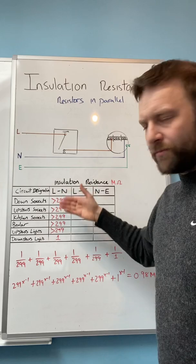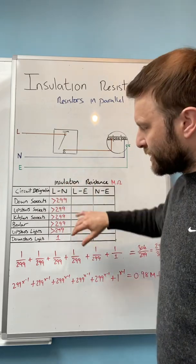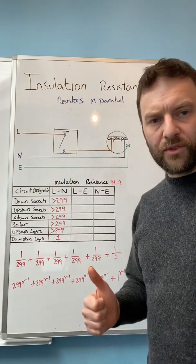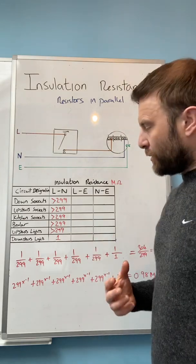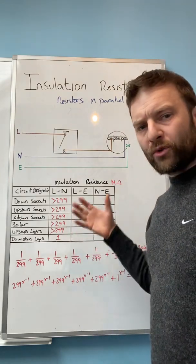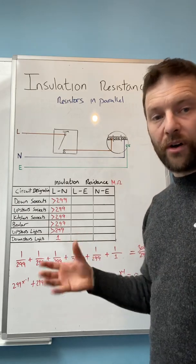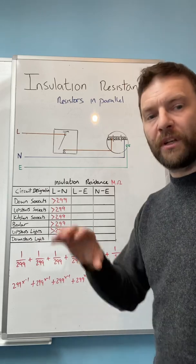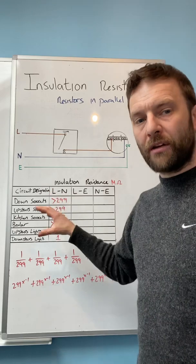And then what I've done is I've just made up some manufactured results between live and neutral for installation resistance. On five of the circuits I've got greater than 299 so we're absolutely good to go. And on one circuit I've got one mega ohm. Now what does that mean, does that mean that's a pass or a fail? Because one mega ohm I could say that that is a pass for that circuit but according to BS 7671 it's for the whole installation and the only way to work that out is to do resistors in parallel.